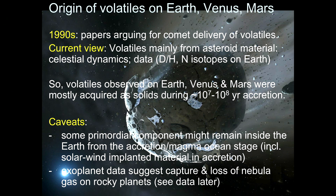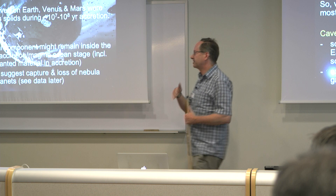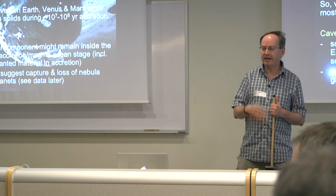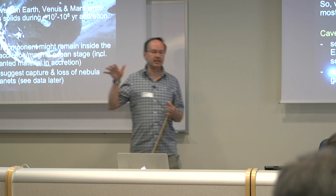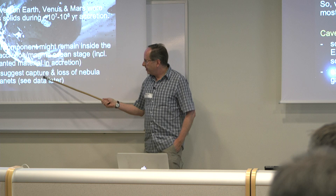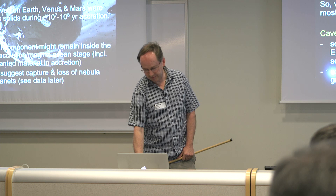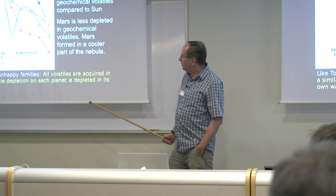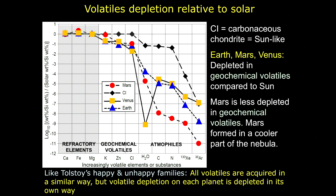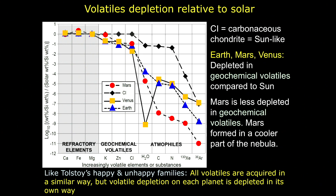These volatiles are thought to have been acquired on the terrestrial planets during accretion as solid materials. There are caveats: during the magma ocean phase, some primordial component of the nebula might be retained. Exoplanets also tell us something strange. Stephen talked about a division between objects smaller than about 1.5 to 2 Earth radii that are rocky, and larger ones with hydrogen-helium envelopes and lower mean density, suggesting possible capture and loss of nebula gas.